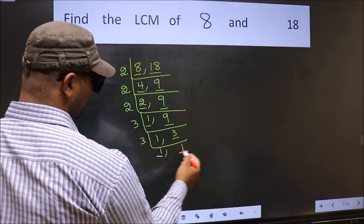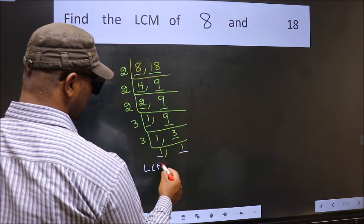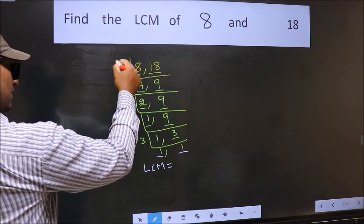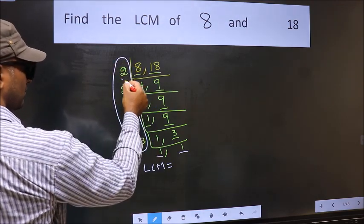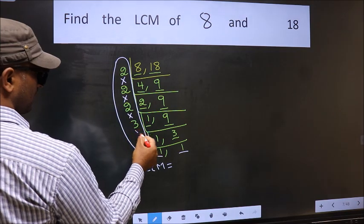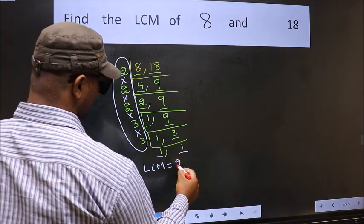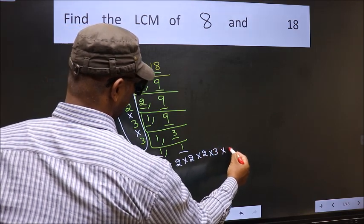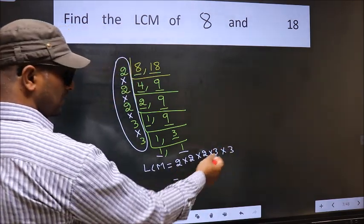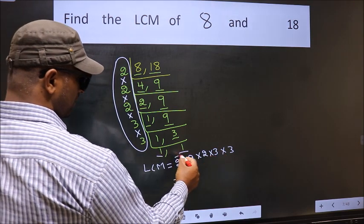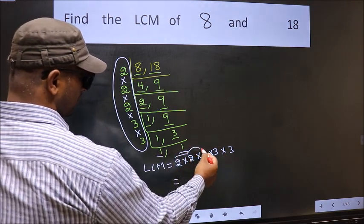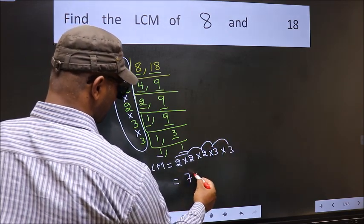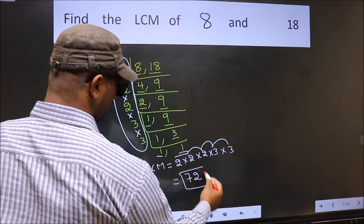We got 1 in both places. So our LCM is the product of these numbers — that is 2 × 2 × 2 × 2 × 2 × 3 × 3 × 3. Let us multiply: 2 × 2 = 4, × 2 = 8, × 3 = 24, × 3 = 72. So 72 is our LCM.